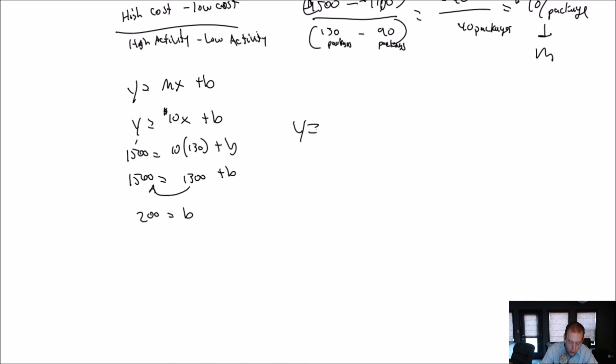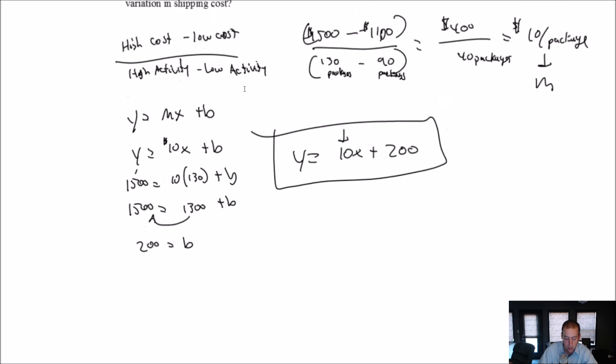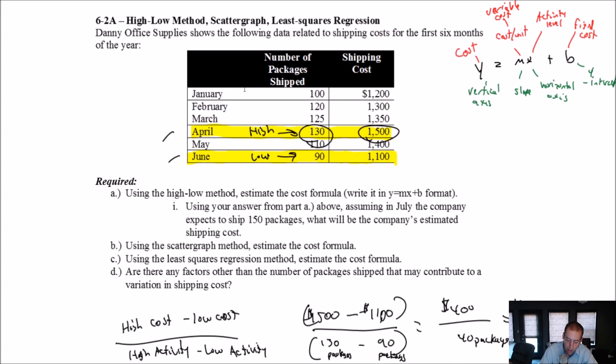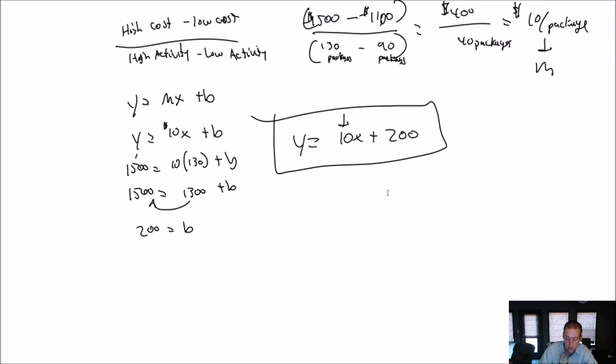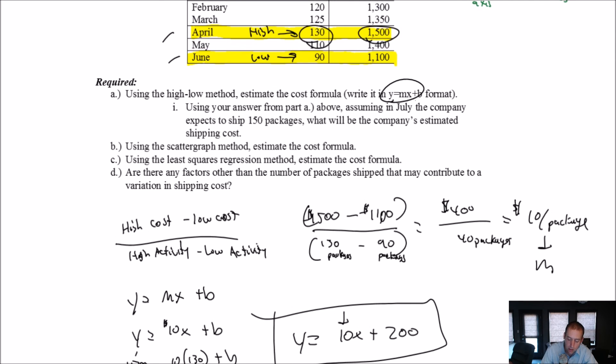So Y equals 10X, because we know our M is 10, plus $200. There we have our formula for a line. This would be the answer to that part of the question. So the question asked, express your formula in Y equals MX plus B format. We've answered part A here. Y equals 10X plus 200. The question goes on.